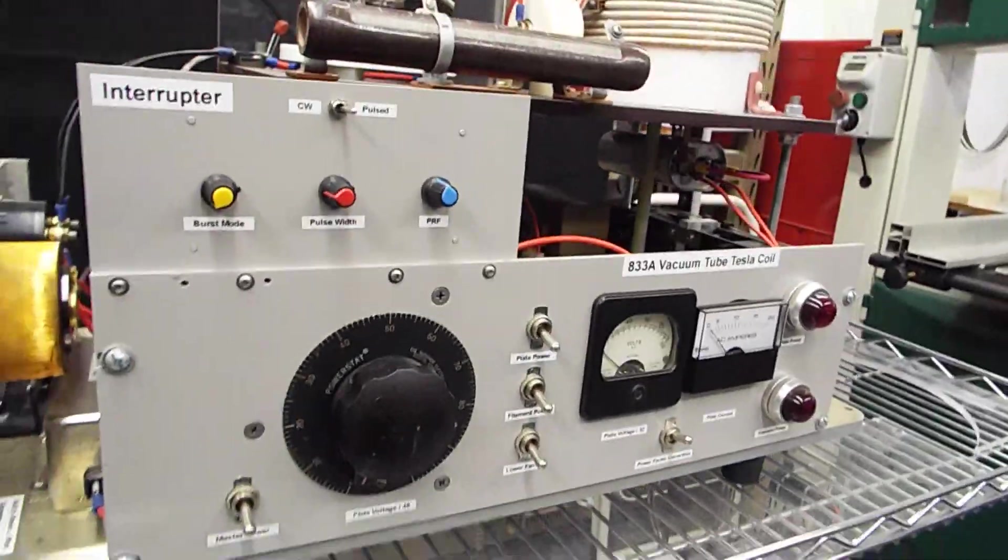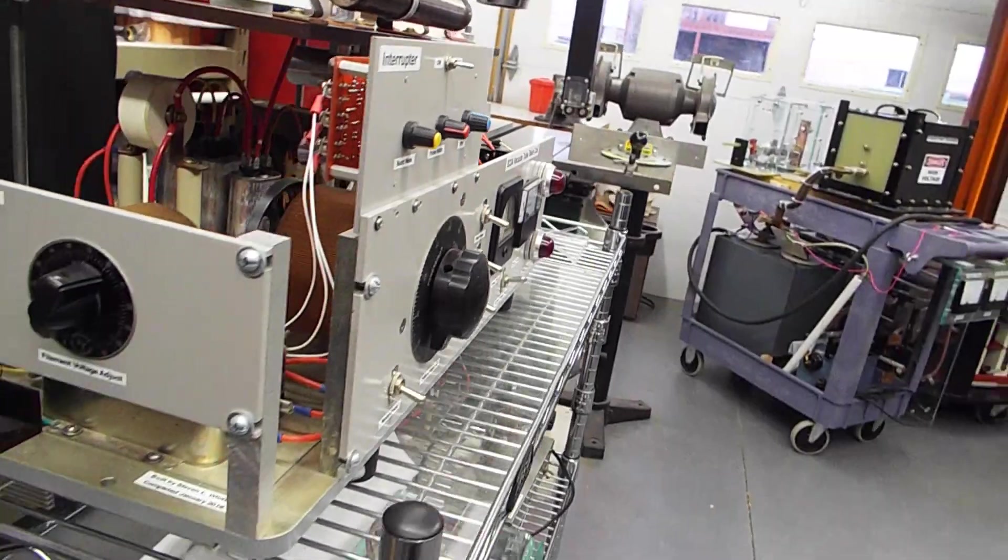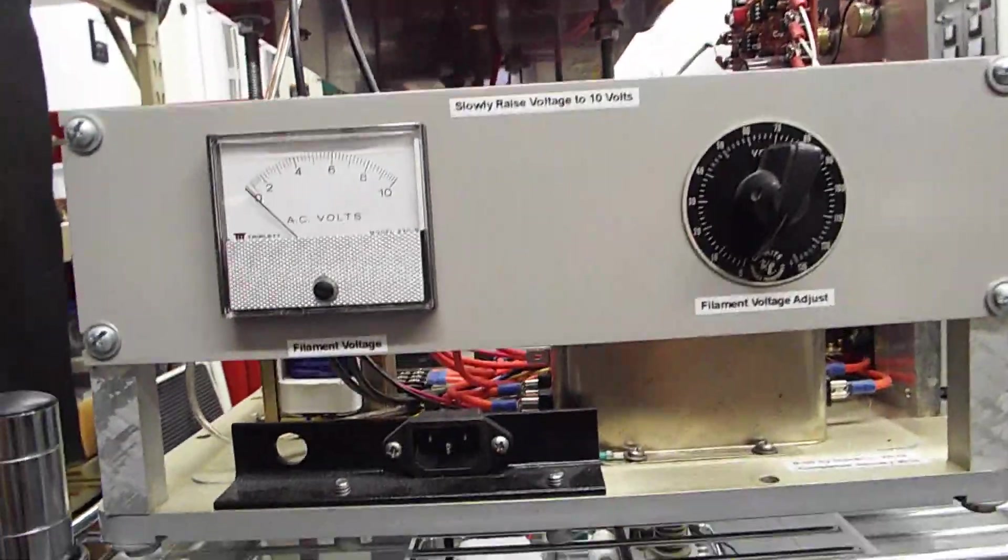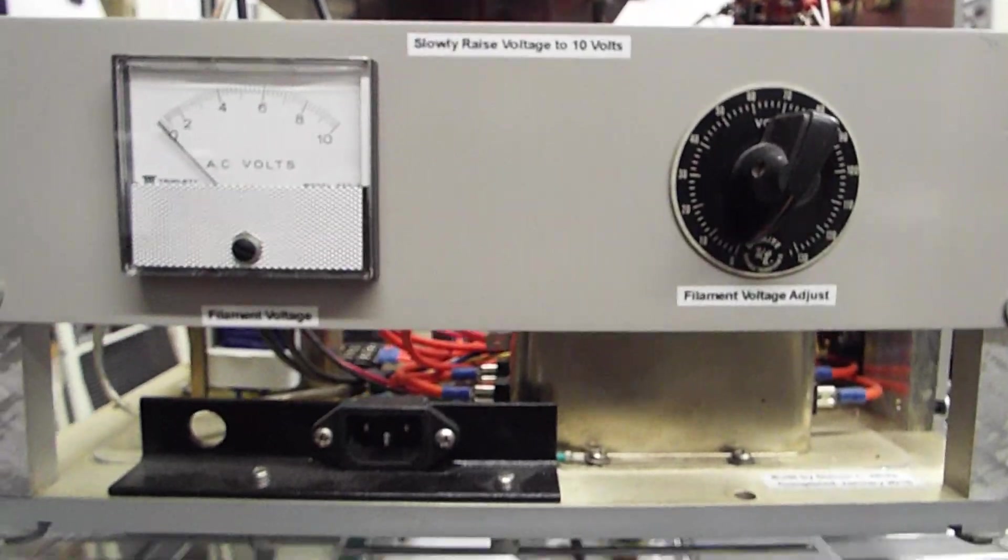And moving to the side, there's actually another smaller front panel over here, because I didn't have room on the front. This is to control the filament voltage.